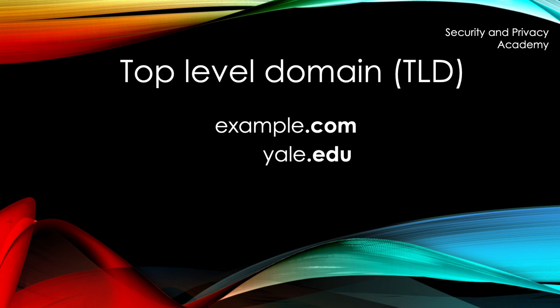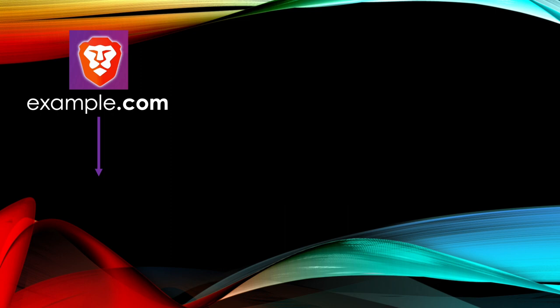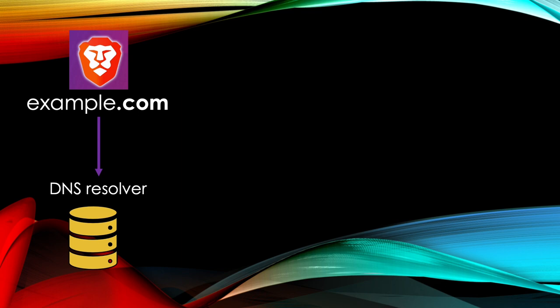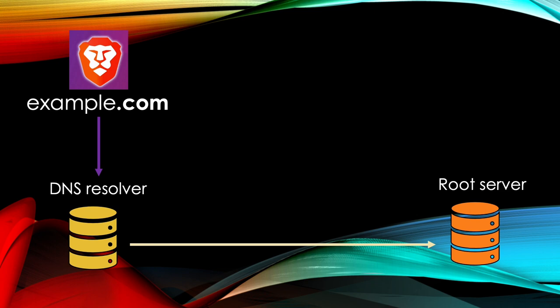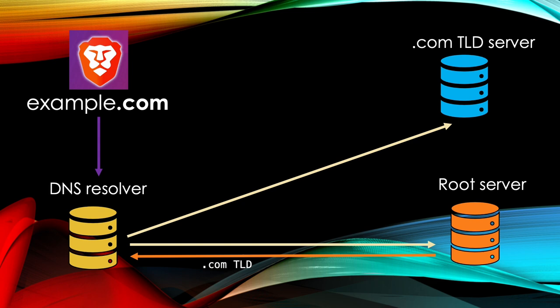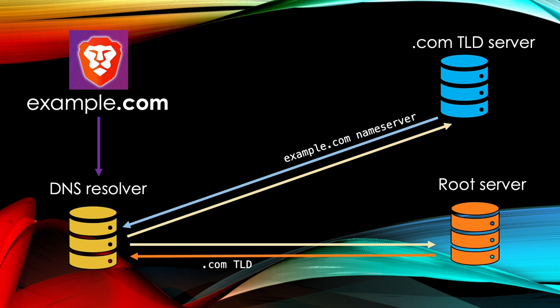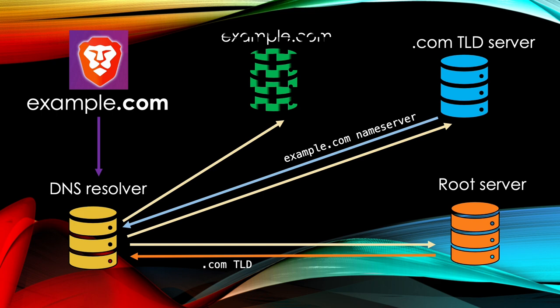First, assume you enter example.com into your browser. The browser then asks the first DNS server, the DNS resolver, to resolve this query into an IP. The resolver first asks the DNS root server for the address of the top-level domain server — in this case .com. The root server answers with the IP of the .com TLD server, which can now be queried for the name server of example.com. It likewise answers with example.com's name server address. The final step is that example.com's DNS name server responds with the appropriate IP, which can now be returned to the web browser.